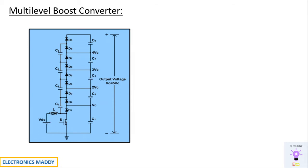This is the circuit diagram of a multi-level boost converter. A boost converter is basically a device that is used to increase the DC voltage from one level to another. This circuit has the resemblance of a boost converter up till a certain point, where instead of a single diode and capacitor, you have capacitors and diodes connected in a particular fashion in order to obtain multiple levels of DC output voltages. That is why it is called a multi-level boost converter.